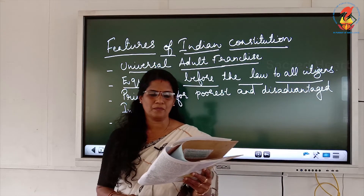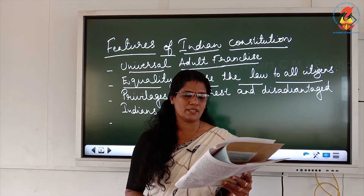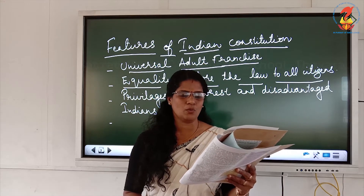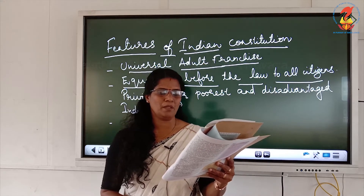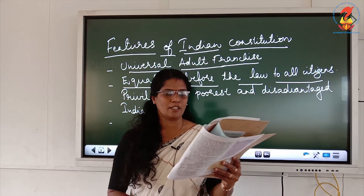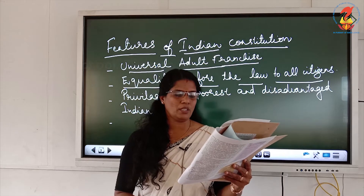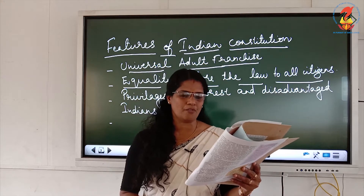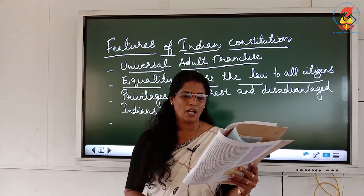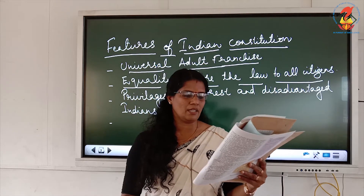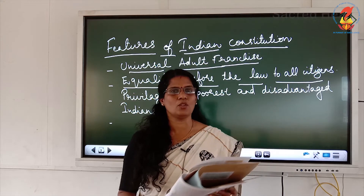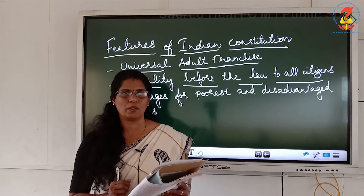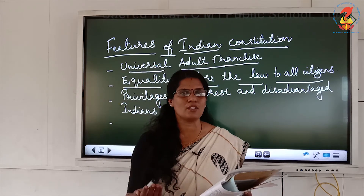Between December 1946 and November 1949, around 300 Indians had a series of meetings on the country's political future. This was mainly required because ours was a colonial rule, and each part needed to be taken care of. It should be an ideal constitution providing equality, with everyone equally treated. Political leaders from different parts sat together and discussed, and on 26 January 1950 this constitution came into effect.